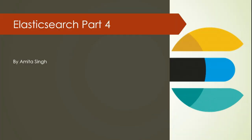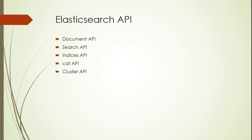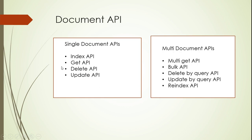This session is a continuation of the last session where I talked about the Elasticsearch API. I already covered the Document API, and in this session I'll be covering the Multi-Get API, Bulk API, and Reindex API — these three things.